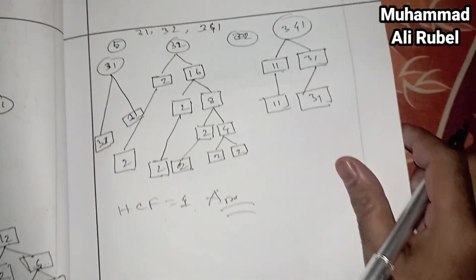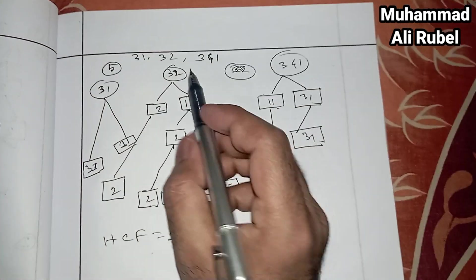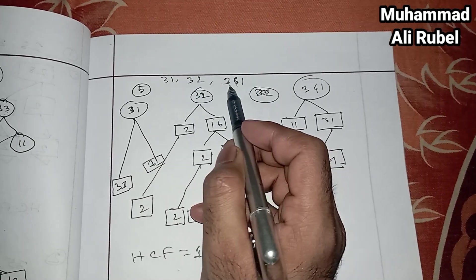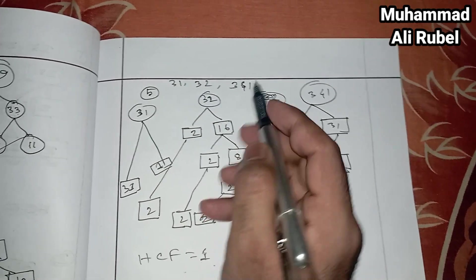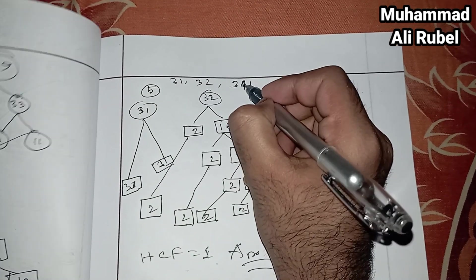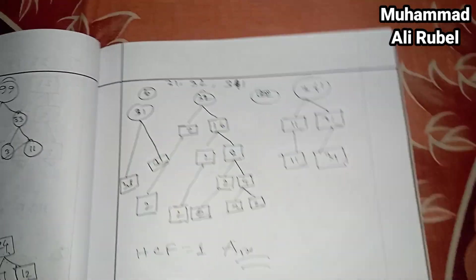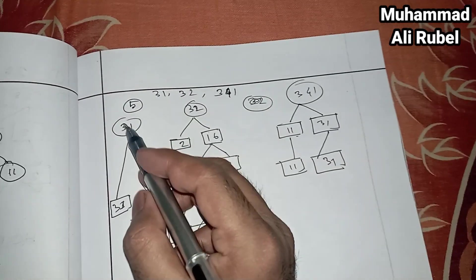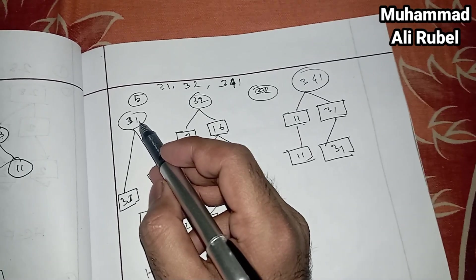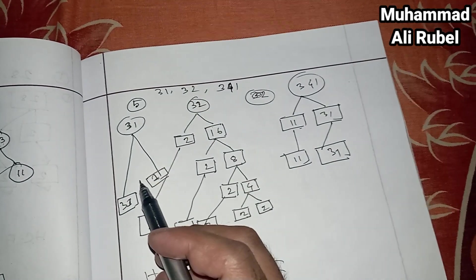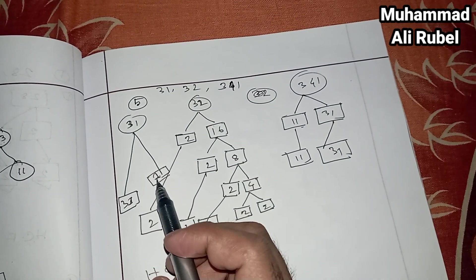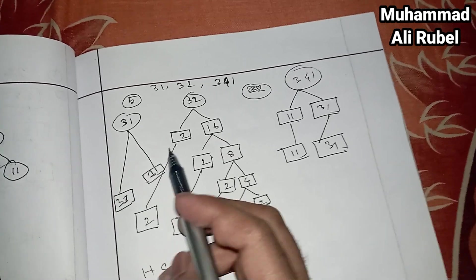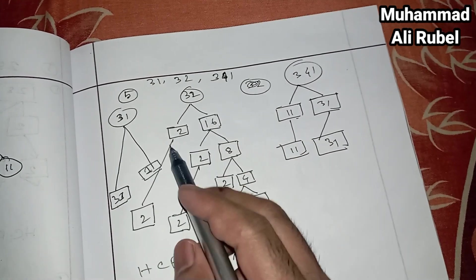The final problem, number 5: 31, 32, and 341. You look — 31 is a prime number, so we can only divide it by 1. And for 32: 2 times 16 equals 32, 2 times 8 equals 16.